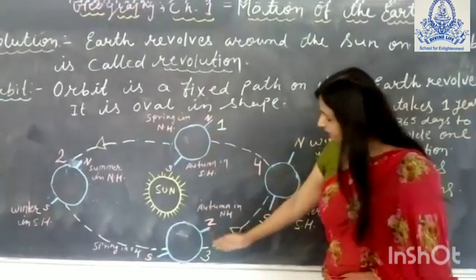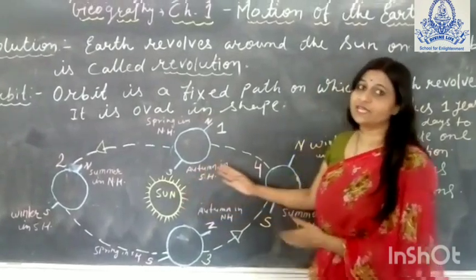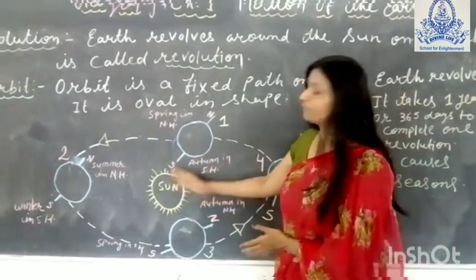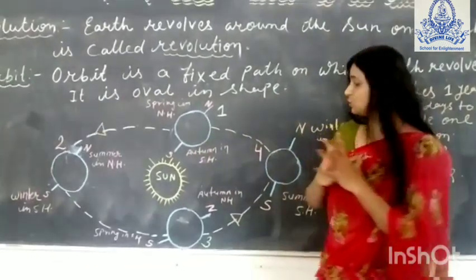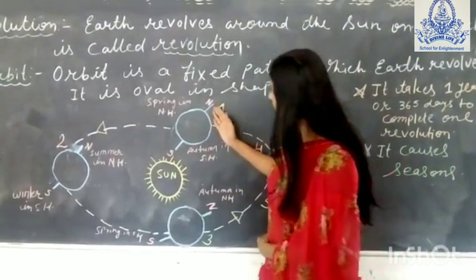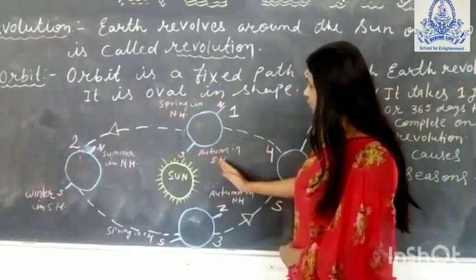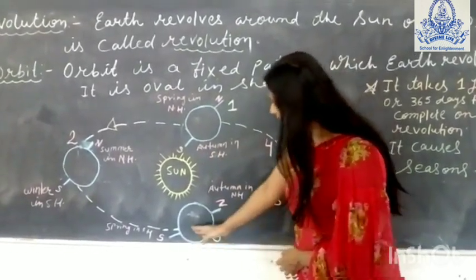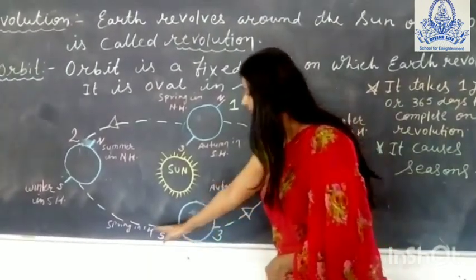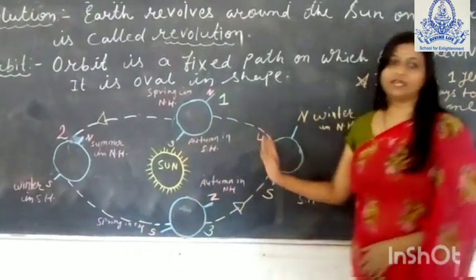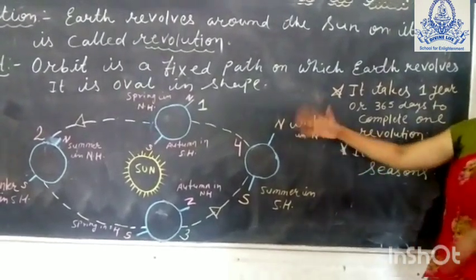Now we will talk about positions 1 and 3. In these positions, both hemispheres receive the same amount of sunlight, meaning the sun rays fall directly on the equator. So in position 1, the northern hemisphere has spring season and the southern hemisphere has autumn season. In position 3, the northern hemisphere has autumn season and the southern hemisphere has spring season. In this way, the revolution process causes seasons to change.